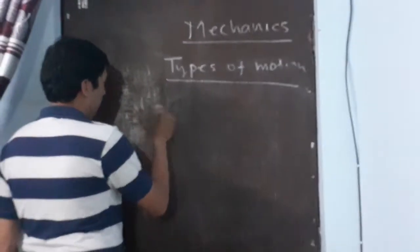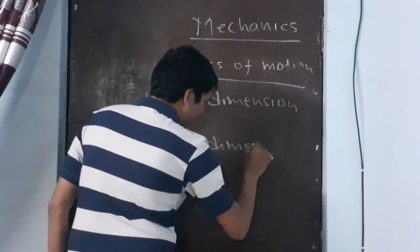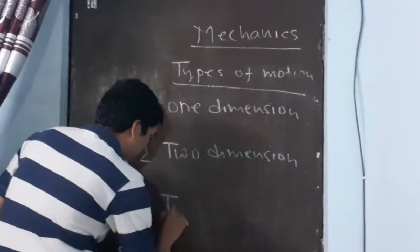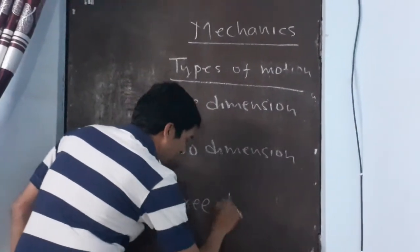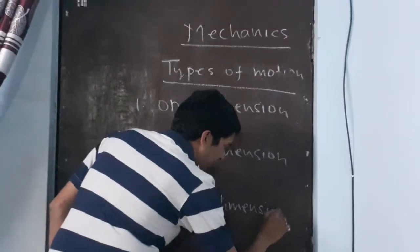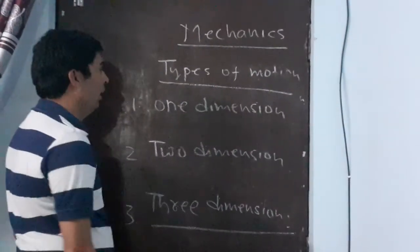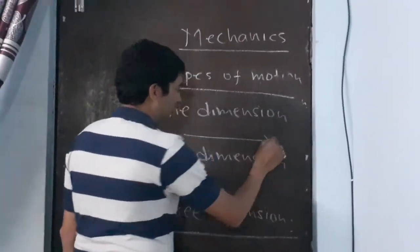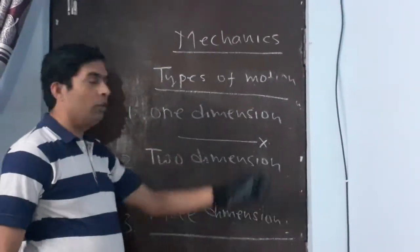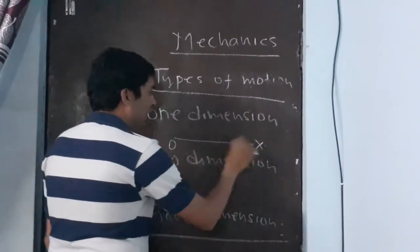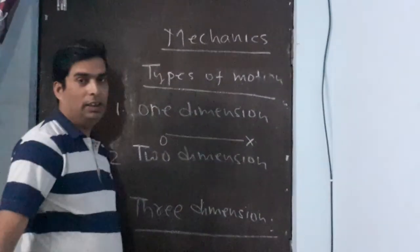Types of motion according to the coordinate system: we have motion in one dimension, motion in two dimensions, and motion in three dimensions. One dimension: the body is moving in x-axis only. Here the motion is governed by one factor. It is the origin and the direction of motion is only on the x-axis.